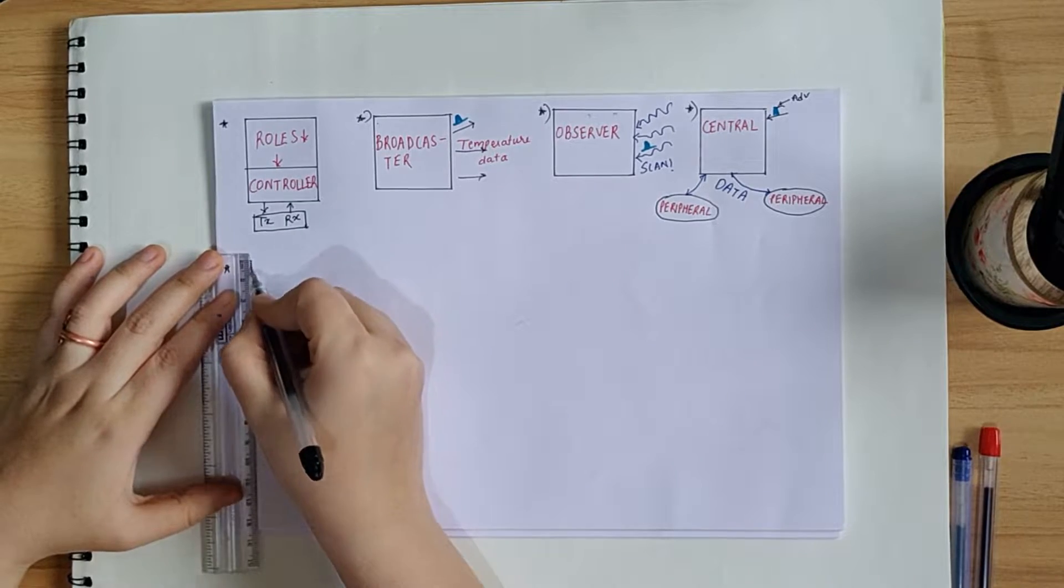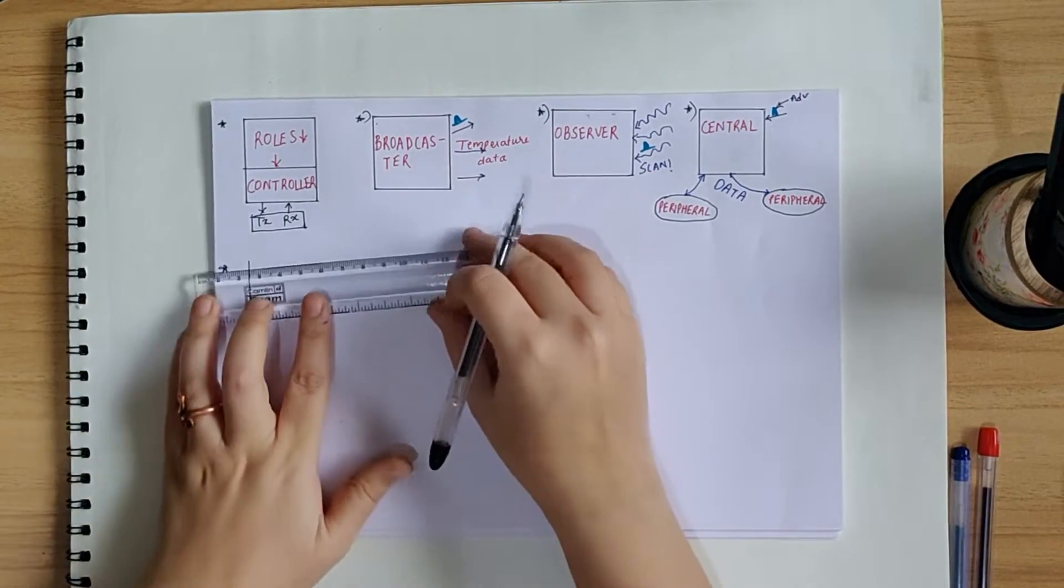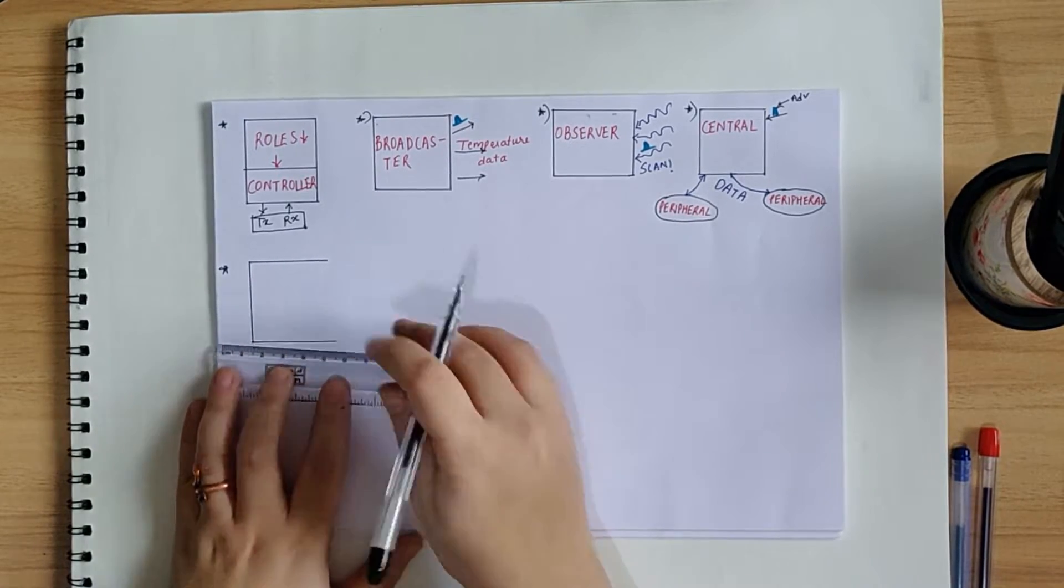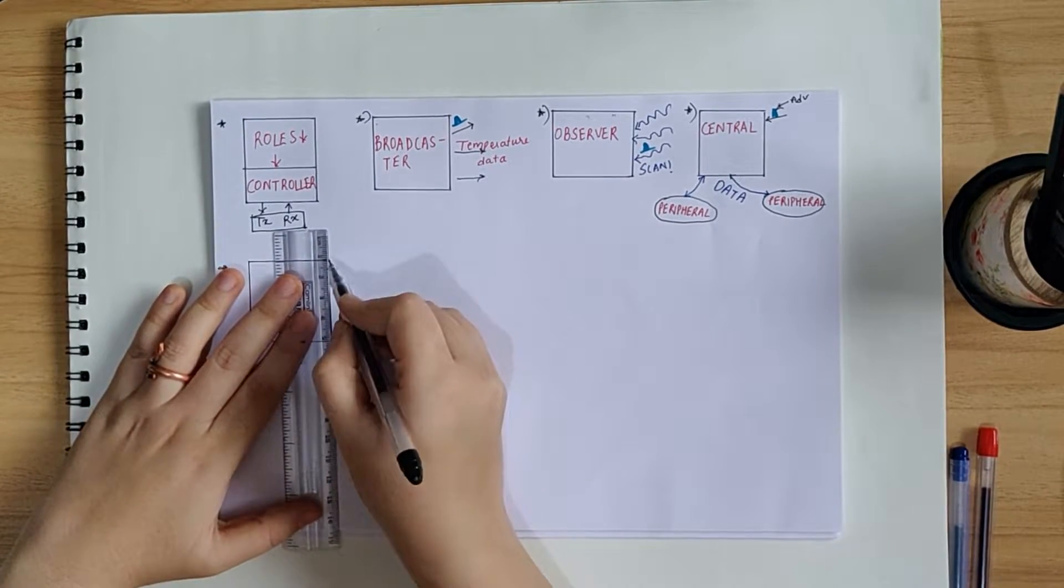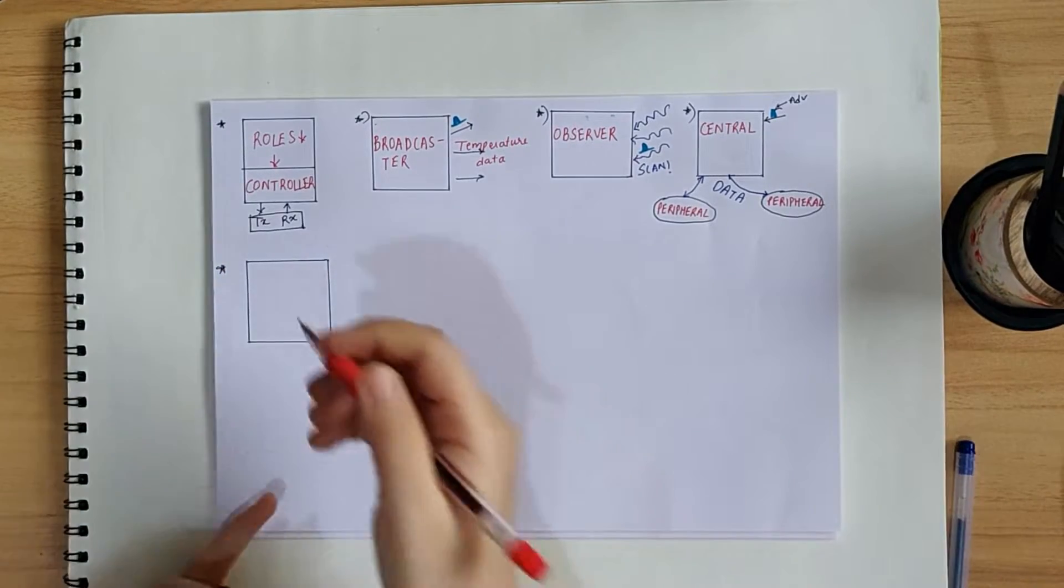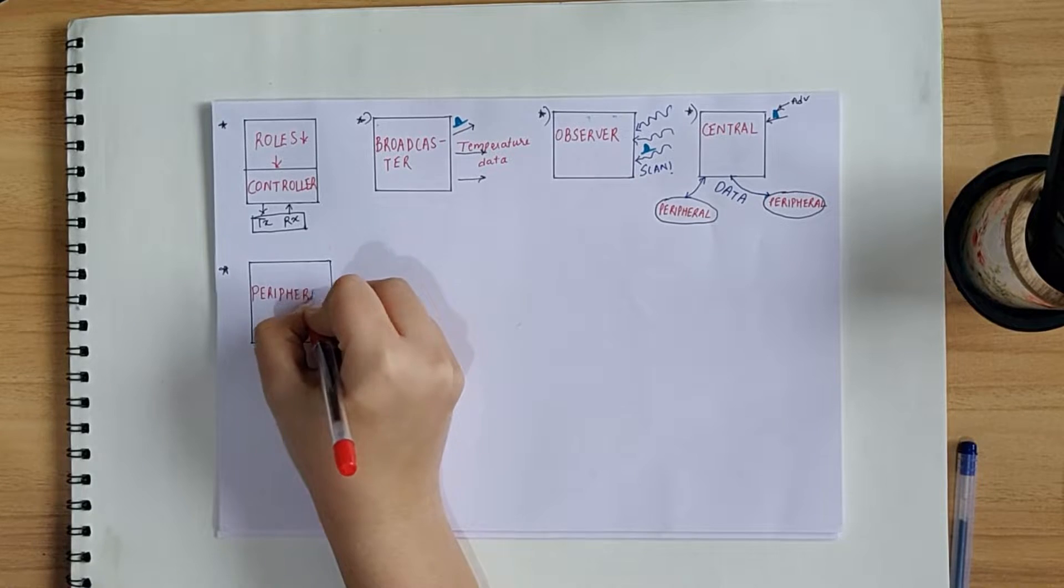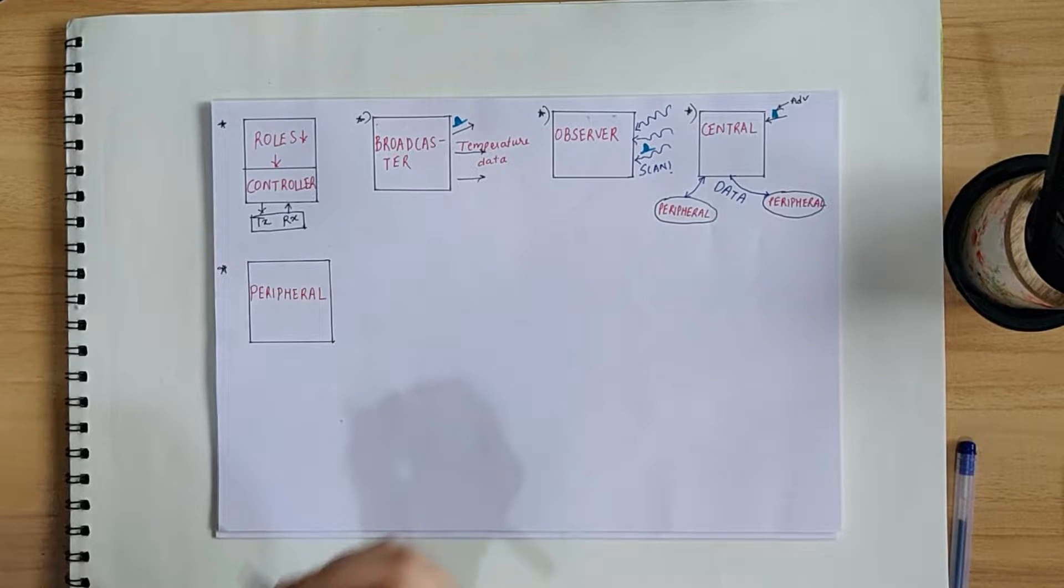Which is peripheral. Peripheral is the one that advertises and once connected with central, it keeps on exchanging the data only with that particular central. It can still advertise, but cannot make connections to any other stations until the session with that particular central is concluded.